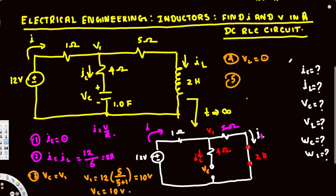What is the energy stored in the capacitor? WC = ½CV². The capacitance is 1 farad and the voltage is 10 volts, so WC = ½ × 1 × 10² = 100/2 = 50 joules.